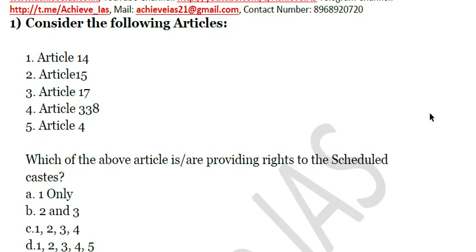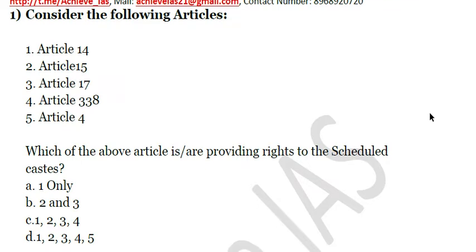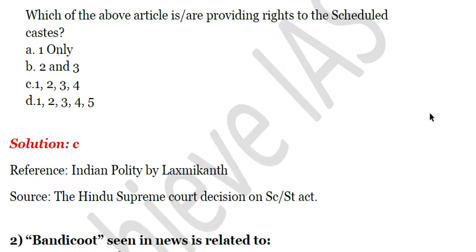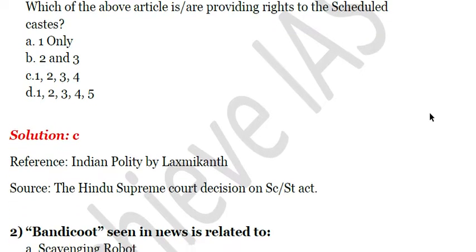The answer is C, that is 1, 2, 3, 4. Article 14 is the right to equality — equality before law and equal protection of law. Article 15 is no discrimination on the basis of caste, creed, sex, place of birth, or religion. Article 17 is the abolition of untouchability. Article 338 provides the National Commission for Scheduled Castes its constitutional status. So the answer is C, and reference can be seen in Indian Polity by Laxmikanth, with sources from The Hindu.